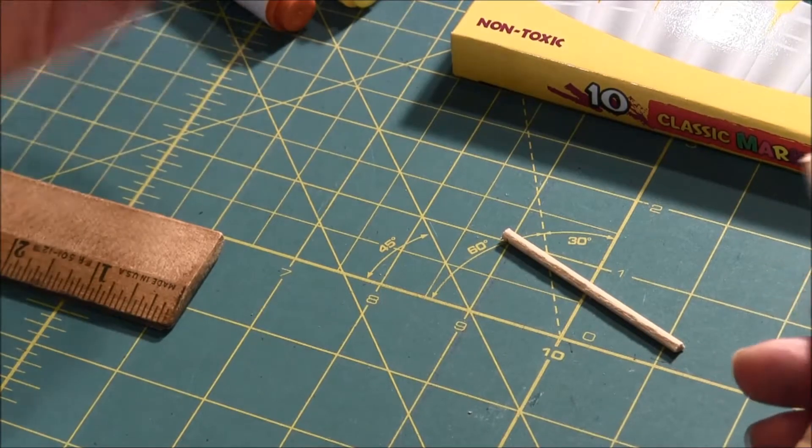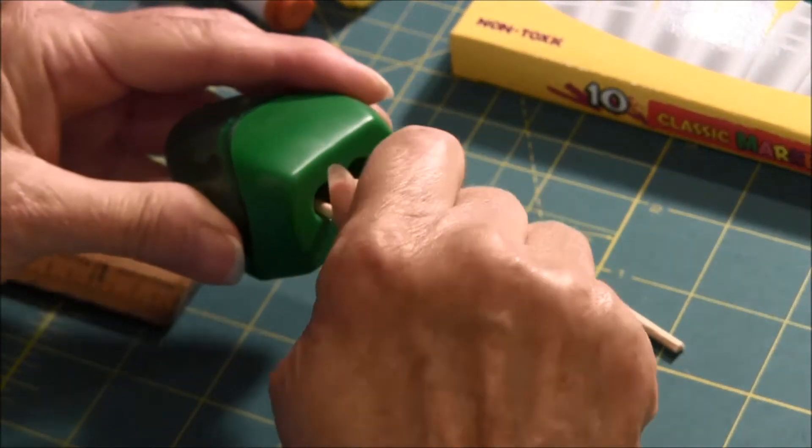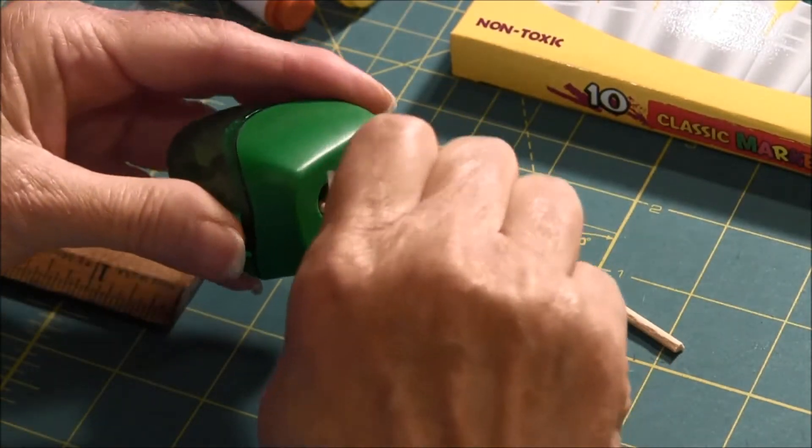The next step is to use your pencil sharpener and sharpen one end so that you have a little point on it.